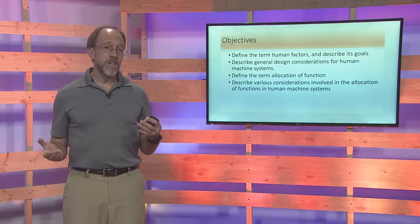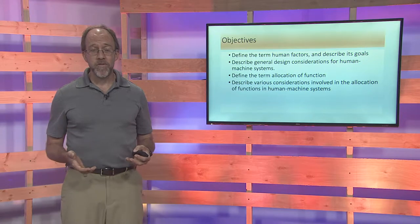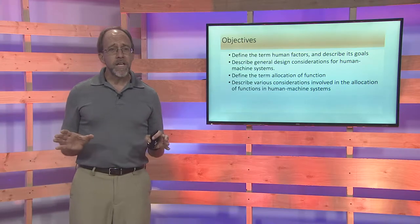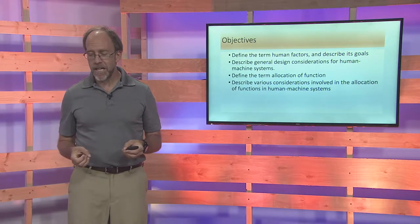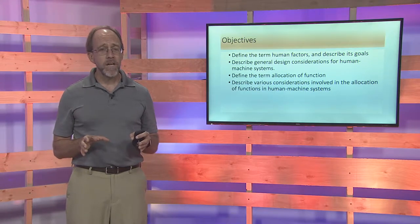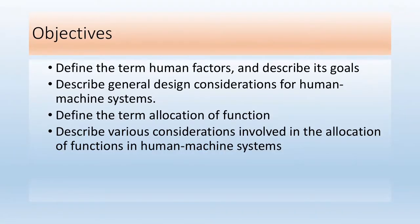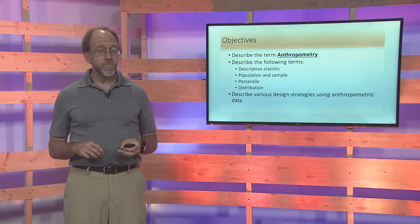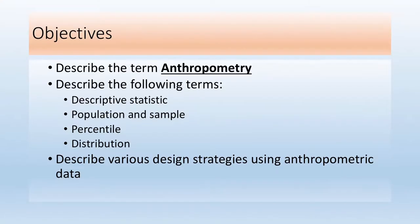What we really want to do today is to get a good understanding of the field of human factors because it's an entire discipline — there are complete majors in the field. We're going to look at one of the primary concepts called allocation of function, because human factors is really dealing with the human element of every single human-to-machine interaction. We're also going to look at the concept of anthropometry, which is essentially human measurement.